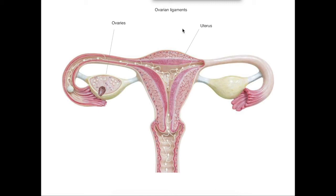Today we're going to look at the ovarian ligaments. Here we have some key labels. We have the ovary and the second ovary here, and the uterus.